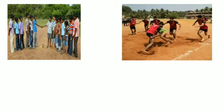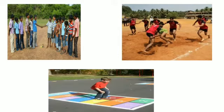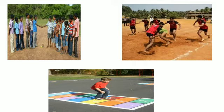Next is kabaddi, which also has two teams. Now we are talking about hopscotch, also called stappu. In this game, a diagram is drawn and one marker is placed. The marker is thrown into boxes, and the player hops across the boxes. Similarly, the marker is thrown in all boxes one by one and the game continues.